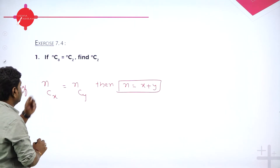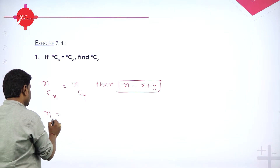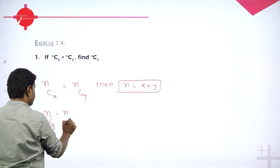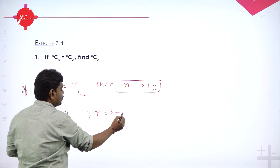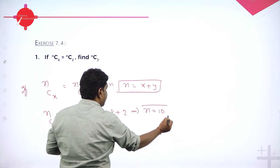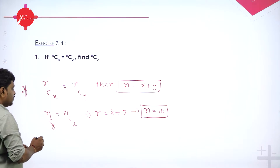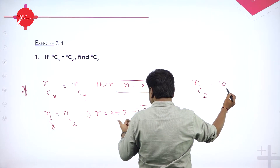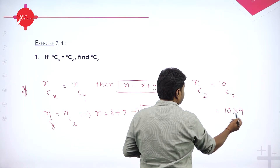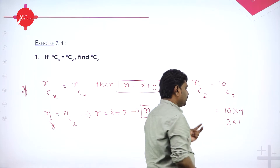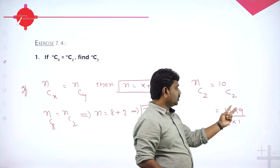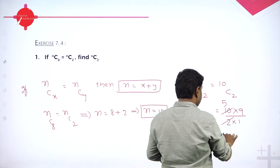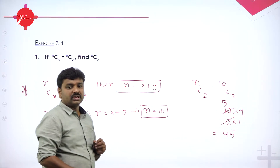nC8 is given as nC2, so that implies n is 8 plus 2, which means n equals 10. Now we find 10C2. That is 10 into 9 divided by 2 into 1. From 10, two terms decreasing in the numerator, denominator 2 factorial. Simplify: 5 nines are 45.